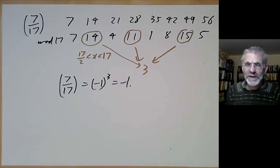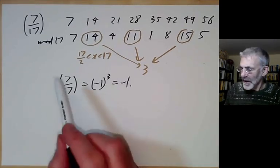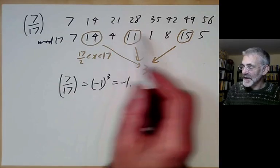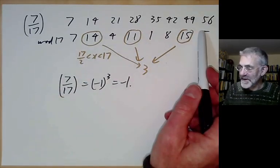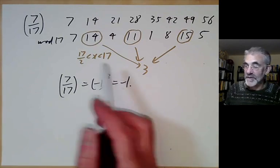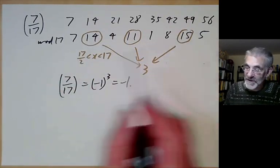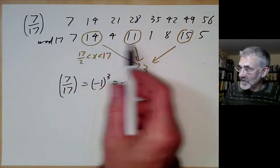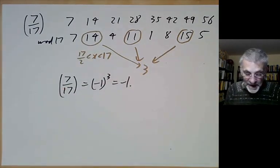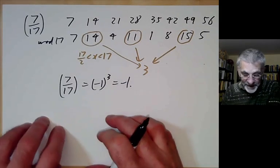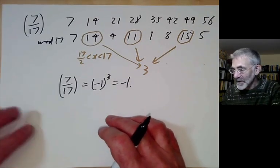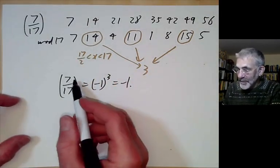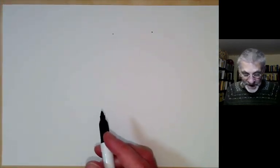You might think Gauss's criterion is useless because to test whether 7 is a square mod 17 we have to test about 17/2 cases — no faster than squaring the first 17/2 numbers to see if any equal 7. However, the key point is that it turns out to be possible to count the number of these classes quite directly, and I'll first prove Gauss's lemma and then show how to use it to work out such numbers much faster.